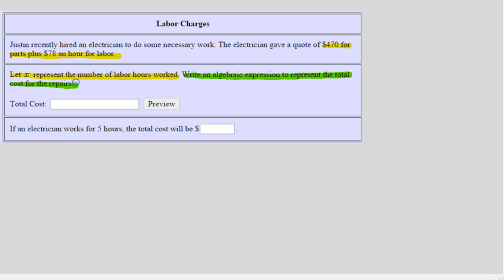So let's think about what parts here are varying and what parts are staying the same. Notice we're given two numbers: $470 for parts—no sorry, for parts—and that does not change. So no matter what, it's $470 for parts. And then we have $78 an hour for labor.